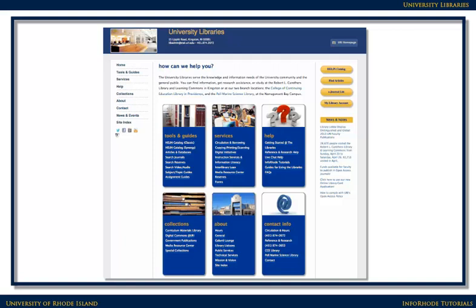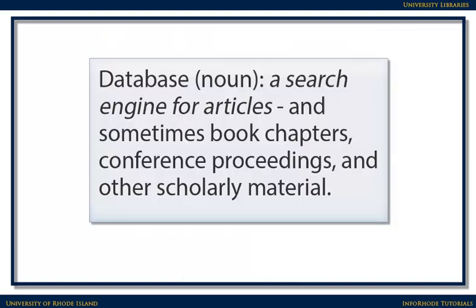You can find journal articles by using a search tool that contains citations to journal articles called a database. Databases are essentially search engines that look for articles and sometimes other scholarly materials. You can type in the topics you're looking for and find articles discussing that topic.